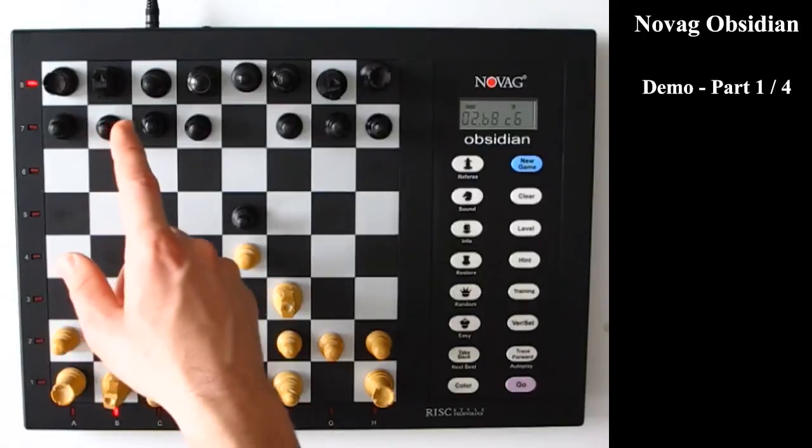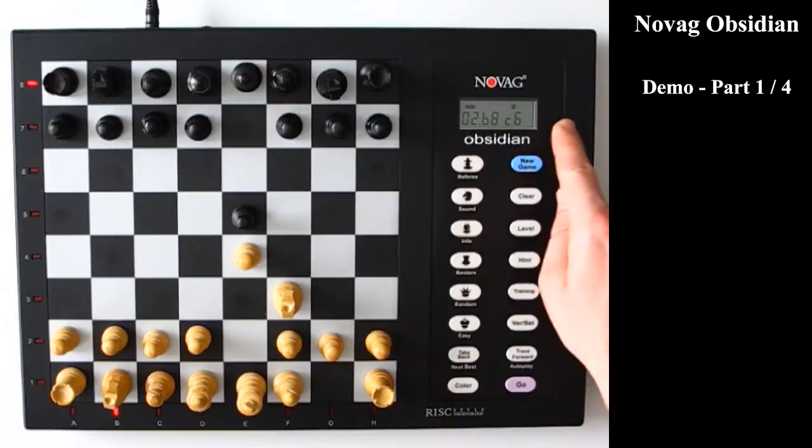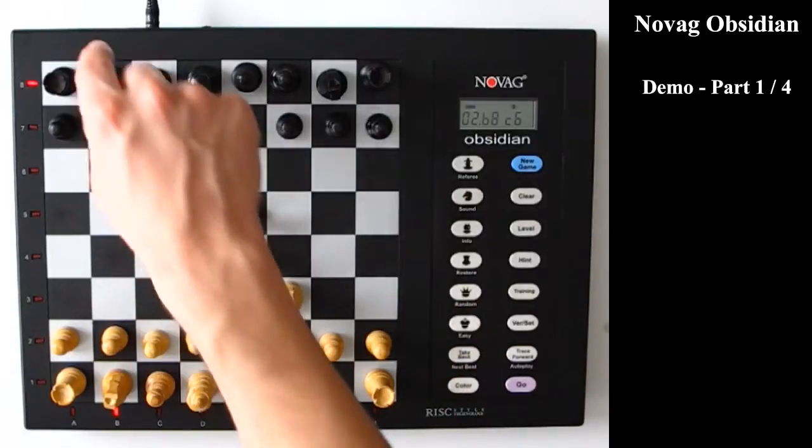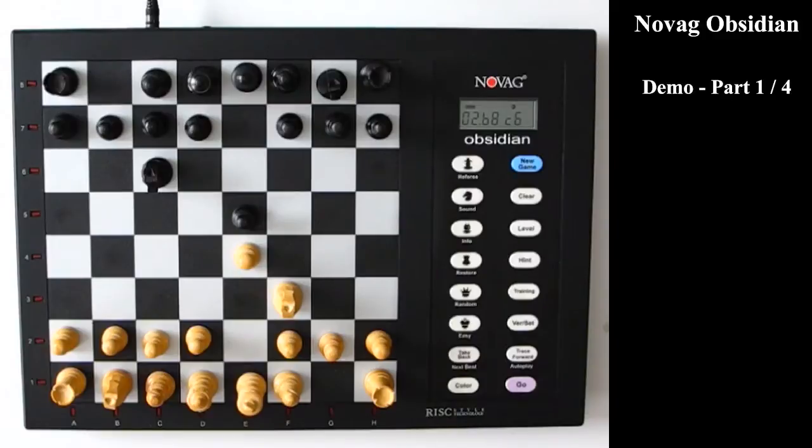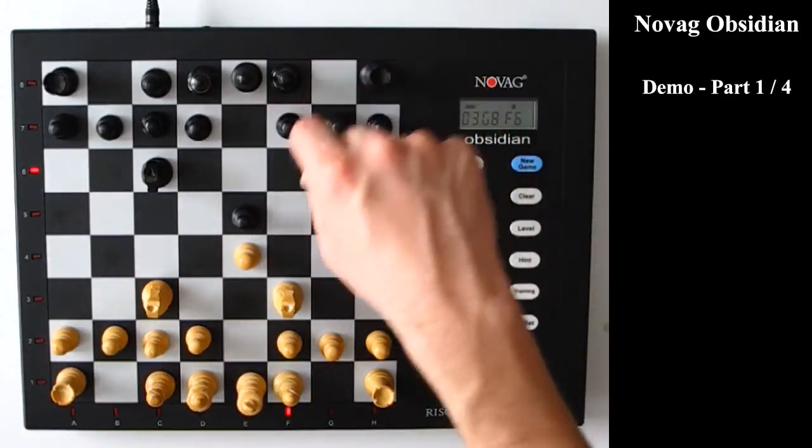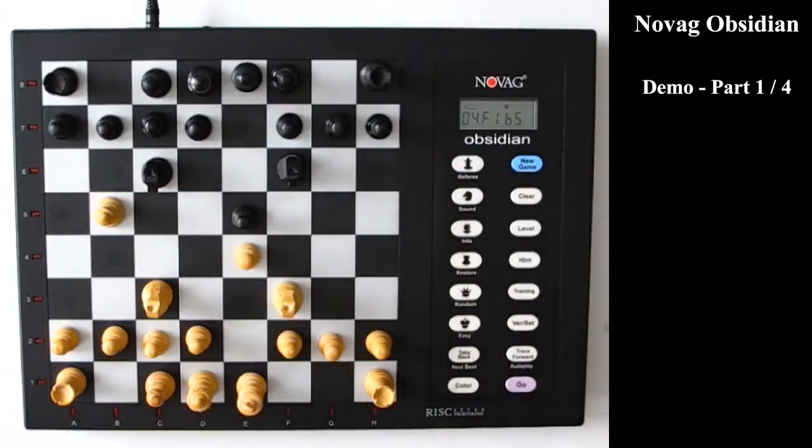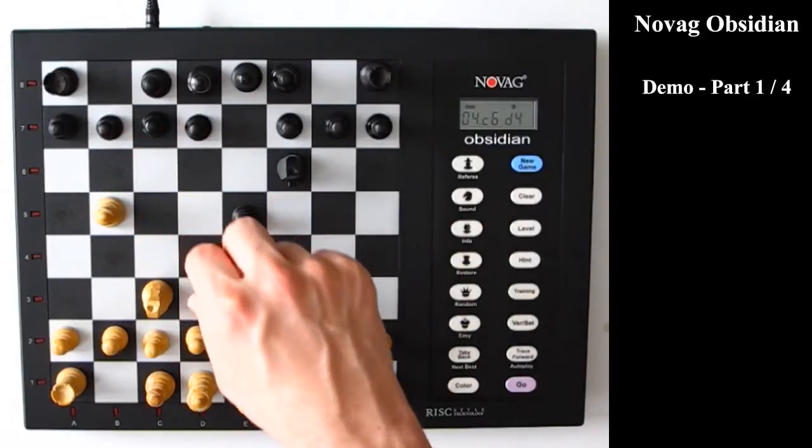So now the computer says that it's going to move the black knight on B8 to C6. So you already see that it wants to move it to C6. So that all works very smoothly. I'll just do a few extra moves to show some more things.